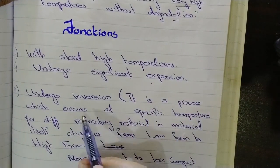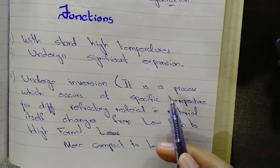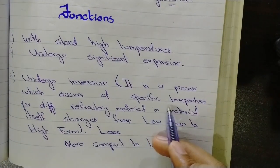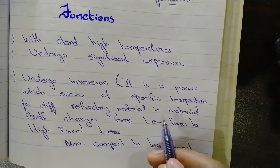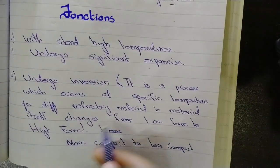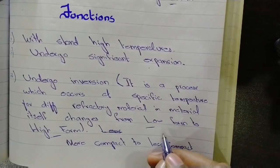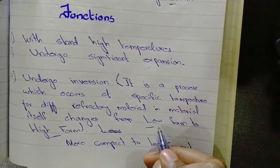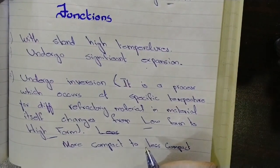Thirdly, they undergo inversion. What is inversion? Inversion is basically a process which occurs at a specific temperature for different refractory materials, in which a refractory material itself changes from low form to high form.